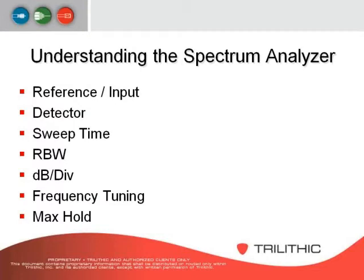There are detectors that detect the signals coming in. Sweep time is how quickly the analyzer looks at the frequency ranges. Your resolution bandwidth allows you to look at closer-spaced carriers. dB per division is how far apart the graticule boxes on the screen are — whether 10 dB or 5 dB apart — which affects how well you can see what's happening in that frequency range.